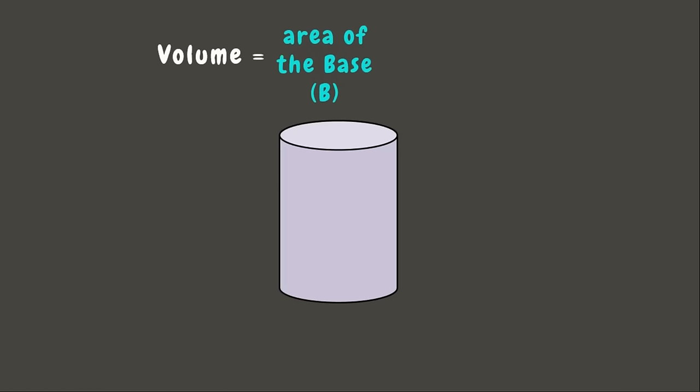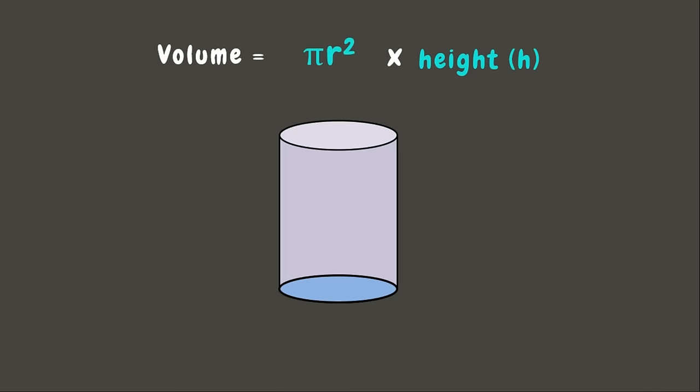Next up, we have a cylinder. Since we know the volume equals the area of the base times the height, let's make a formula for the volume of a cylinder. First, let's identify its base. Since it has a circular base, the area of the base is the area of a circle, which is πr². Therefore, the volume of the cylinder is equal to πr² times the height.